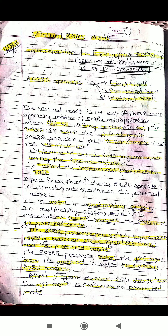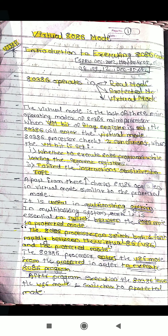The first condition is whether to execute 8086 programs while loading the segment registers. As we know, the 80386 supports all 8086 operations — that is why we call it virtual 8086 mode. The second condition is to find the instructions sensitive to IOPL. These are the two conditions checked by the 80386 processor while working in virtual 8086 mode.